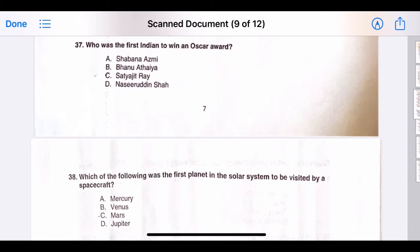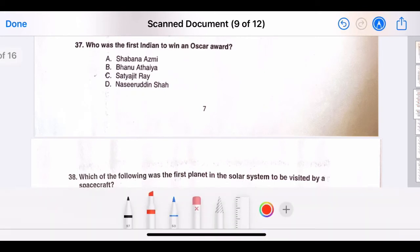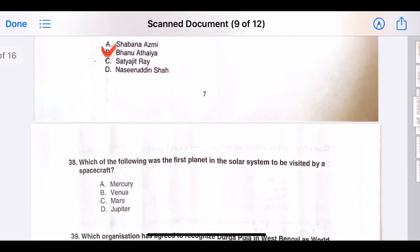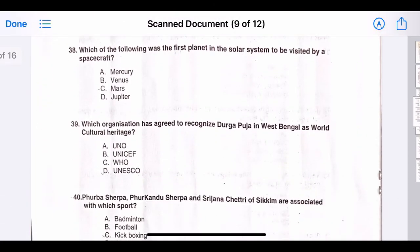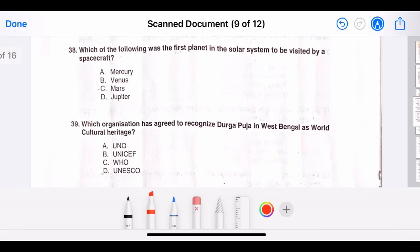Thirty-seven, who was the first Indian to win an Oscar award? The correct answer is option B, Bhanu Athaiya. Thirty-eight, which of the following was the first planet in the solar system to be visited by a spacecraft? The correct answer is option B, Venus.